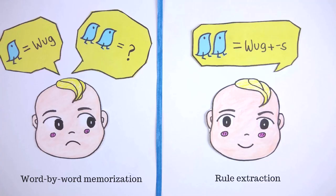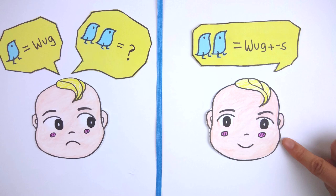This finding supported the rule extraction hypothesis that children learn English morphemes by rule extraction, not by memorizing plural and singular forms independently.